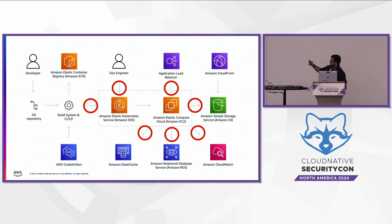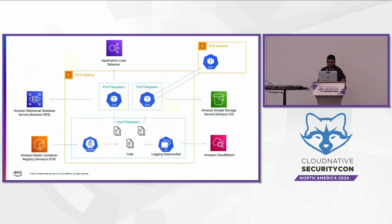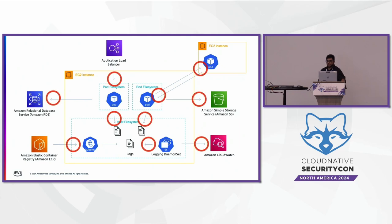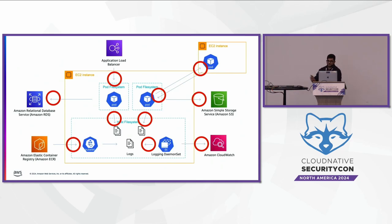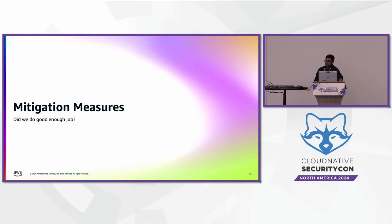When we zoom in on the Kubernetes cluster itself, we have different flows that need to be accounted for in threat modeling. Double-clicking at the pod level, this extends further to a pod interacting with another pod on an EC2 instance, pod interacting with the host filesystem, logging daemon sets, or monitoring daemon sets you deploy. Once we've identified our architecture, access points, and exfiltration points, we can put together threat statements and think about mitigation measures.